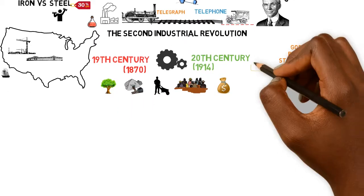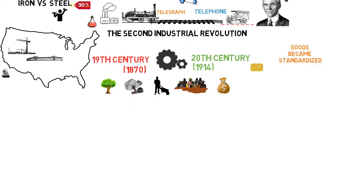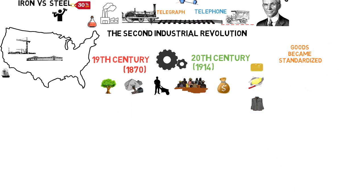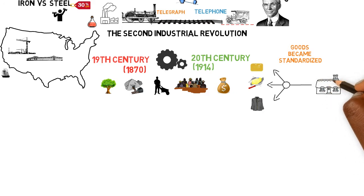Household items like soap, butter, and clothing that used to be made at home started being made in factories.